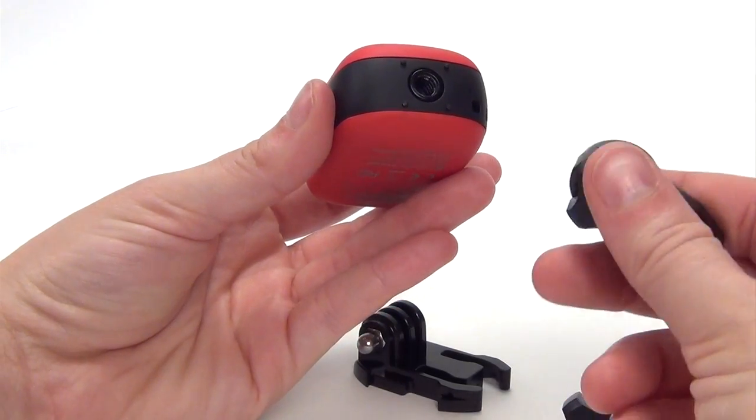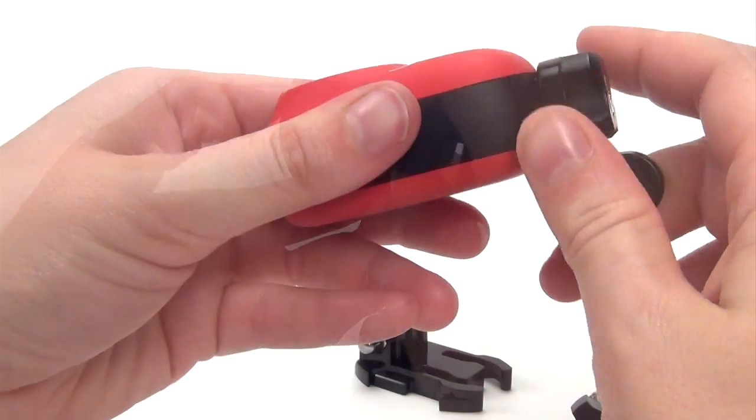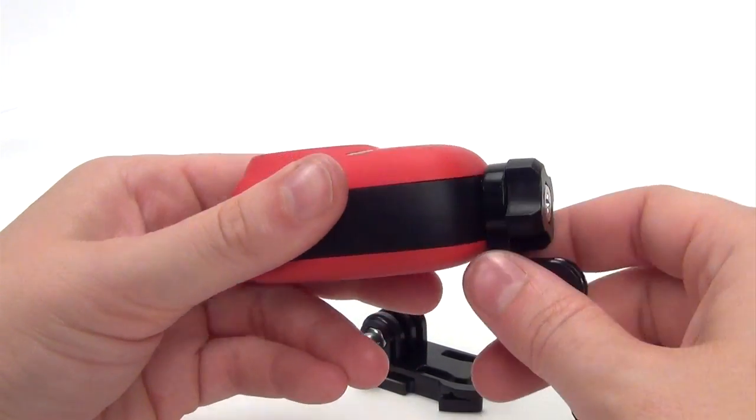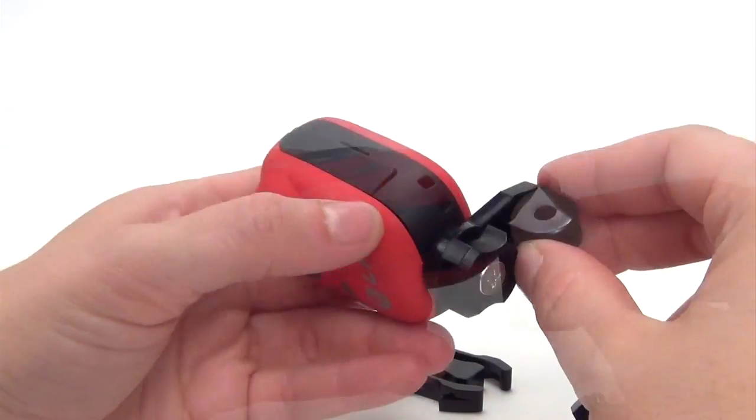It is really easy to attach your Ego to the mount. First, locate the quarter inch threaded accessory port at the bottom of the camera. This port should fit most tripod plates or other commercially available mounts.